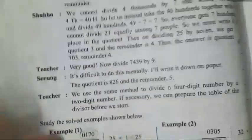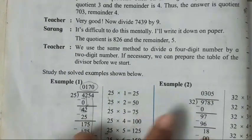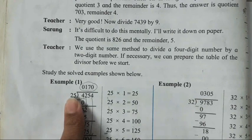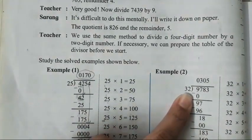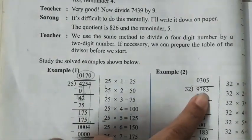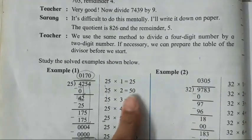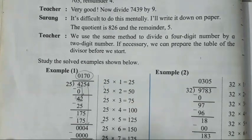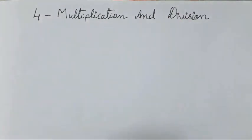Division of a bigger number gets difficult when there is a two-digit divisor. We know the 25 times table, but 32's table is difficult to remember. So I'm going to show you an easy trick for dividing such big numbers. This video is especially for those who have not yet understood how to divide.